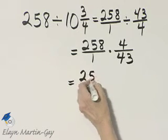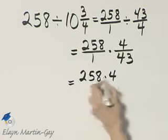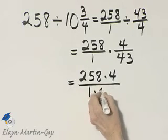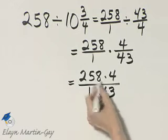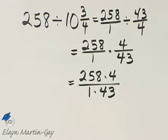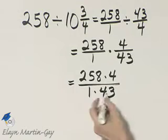That's 258 times 4 over 1 times 43. I happen to notice that 43 and 258 actually have a common factor of 43 in them.